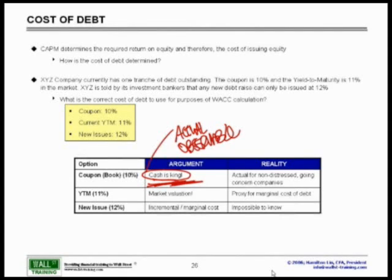Now the yield to maturity and argument for why we would use the yield to maturity of 11% is simply this is what the market has said. The market has spoken and this is currently the amount that the investors demand that your debt returns. New issues are going to be at 12%. The argument for that is simply that this is the incremental marginal cost of issuing new debt.